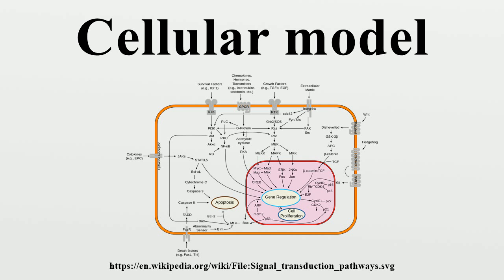Vector fields can have several special points. A stable point, called a sink, that attracts in all directions; an unstable point, either a source or a saddle point which repels;